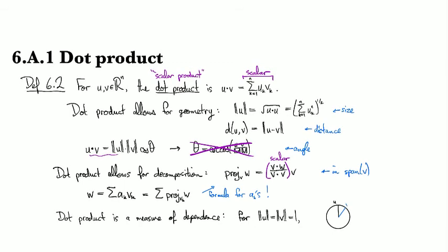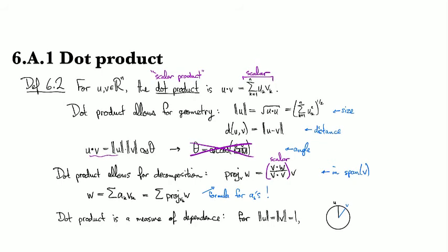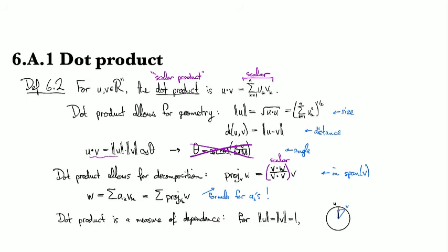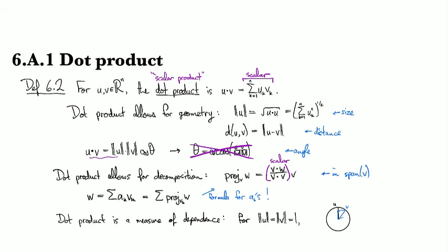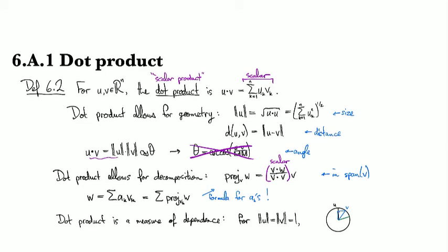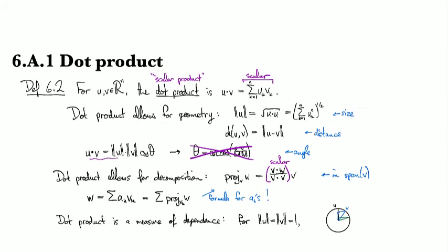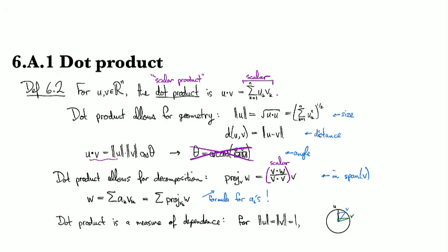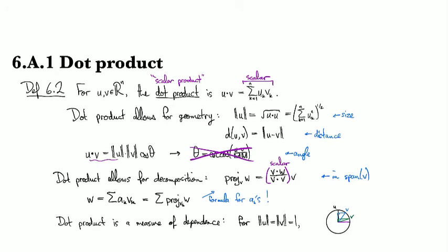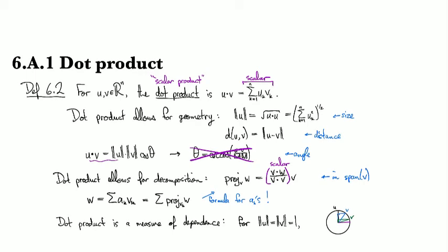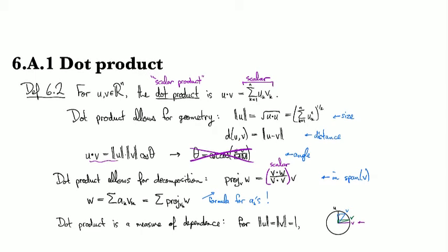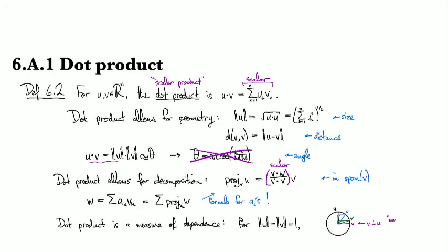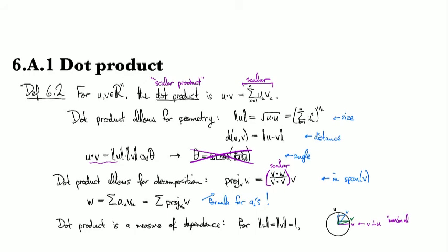Then in this case, the projection is going to be about that long. We could have v over here, in which case the projection is much shorter. And you should think of that projection as being kind of what v has in common with u. And so you can see that if we are orthogonal, like this, then for this one right here, v is orthogonal to u. This is like maximal independence.